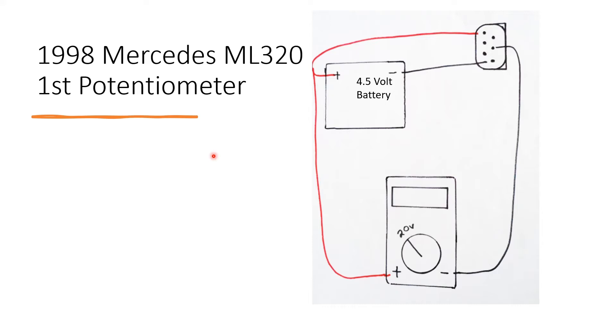For the first potentiometer, you connect up the pins like this. The positive from the battery and the multimeter are going to connect to this pin right here at the top left.